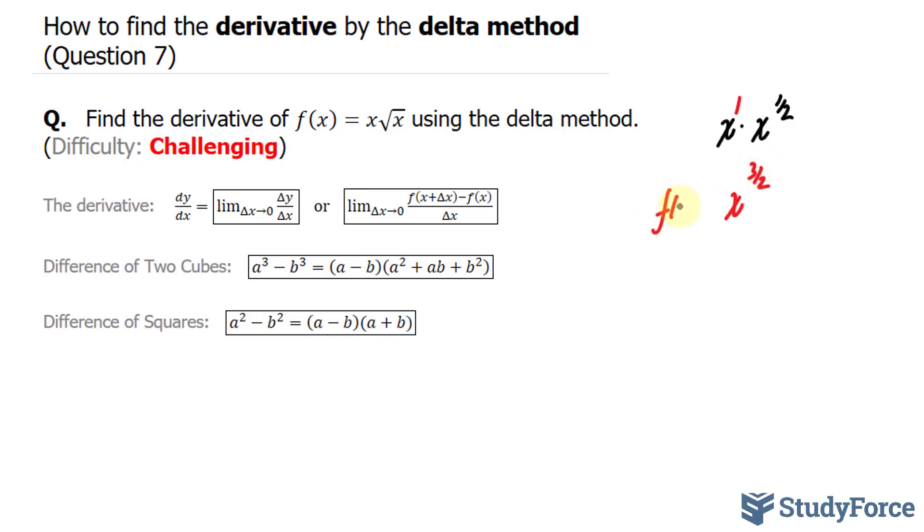So our function will be represented as this. Now I'll apply x plus delta x into where I see an x. Technically, I'm placing this into the definition of a derivative, the limit. So we have the limit as delta x approaches zero.